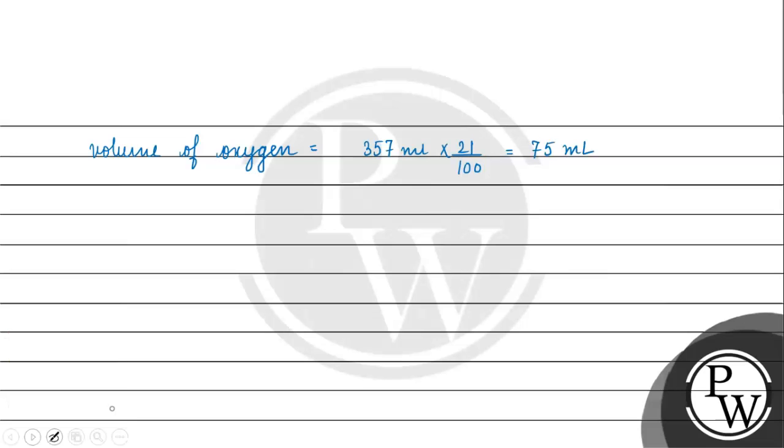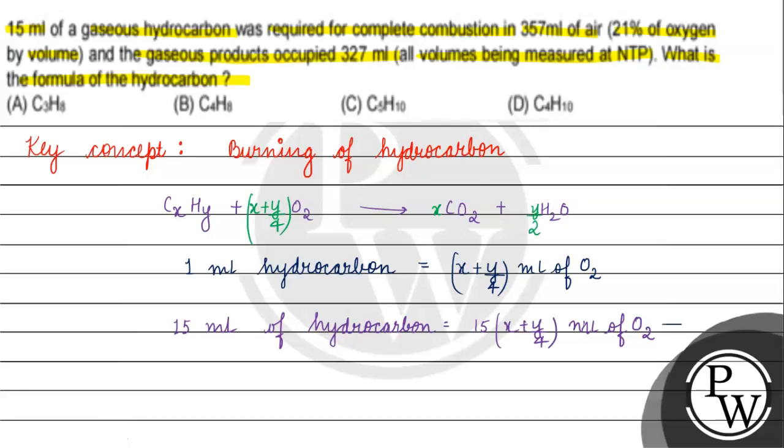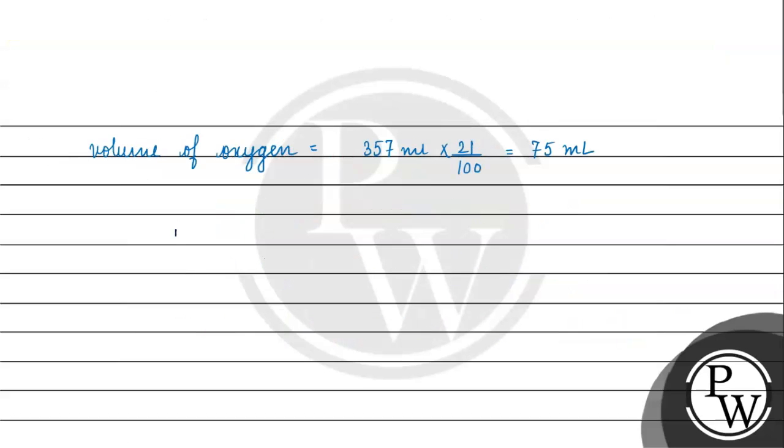So, we have to write the volume of oxygen which is equal to (x plus y/4) ml times 15 is basically equals to 75 ml. This is equation 1.